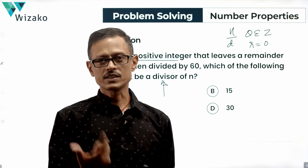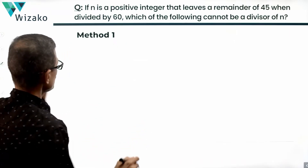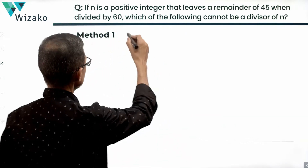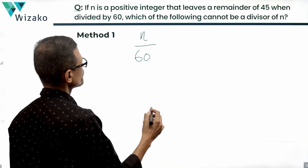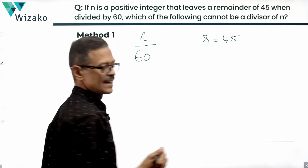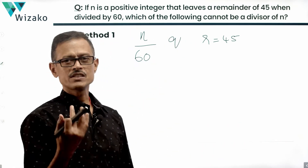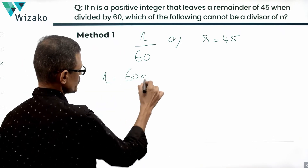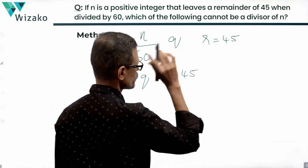The starting point for both methods is what is called Euclid's division algorithm. We have n, which is a positive integer, which when divided by 60 leaves a remainder of 45. Let's assign a quotient to it — say the quotient is equal to q, which is a positive integer. Therefore, n is equal to 60q plus the remainder, which is equal to 45.